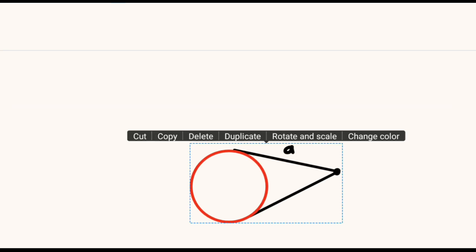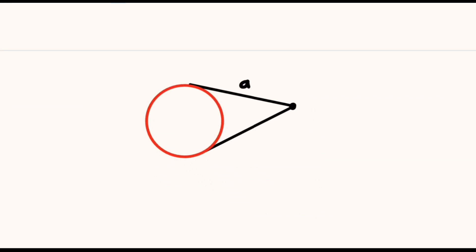Remember the two tangent theorem, which states that if two tangents are drawn to a circle from the same external point, then the tangents are equal in length. So the distance from that tangent to that common point is equal to a, and this one will also be equal to a.